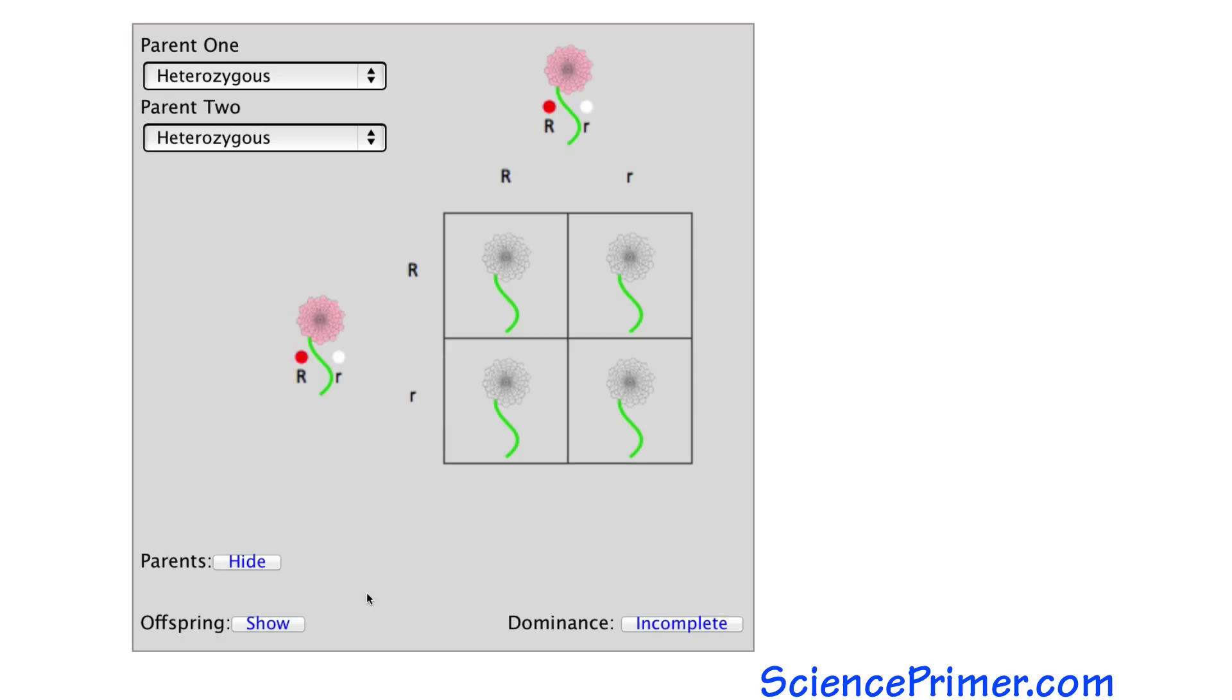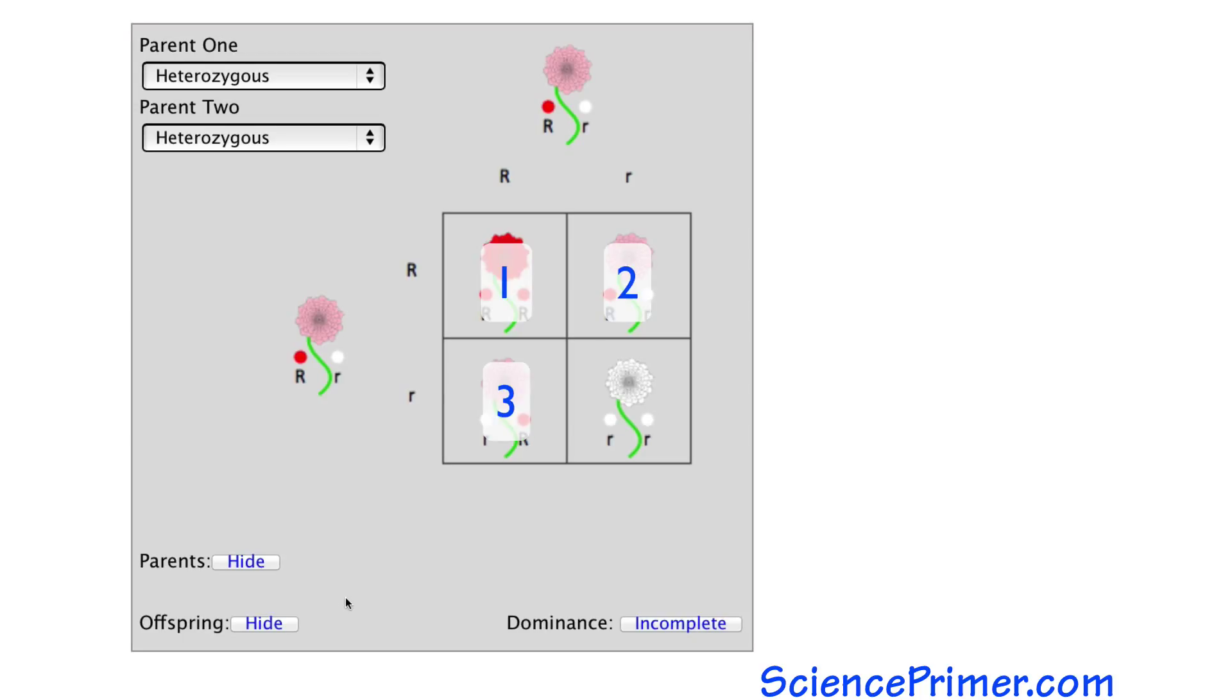Once complete, a Punnett square shows the genotypes possible from crossing two individuals. Each of the four boxes in the square contains one of the four possible genotypes. The genotype in each box has a 25% probability of occurring every time the two individuals are crossed.